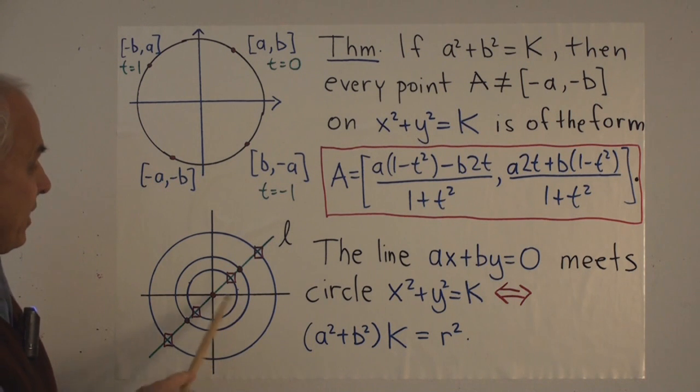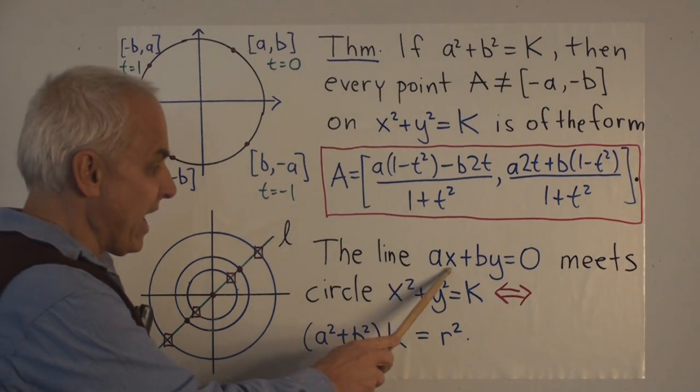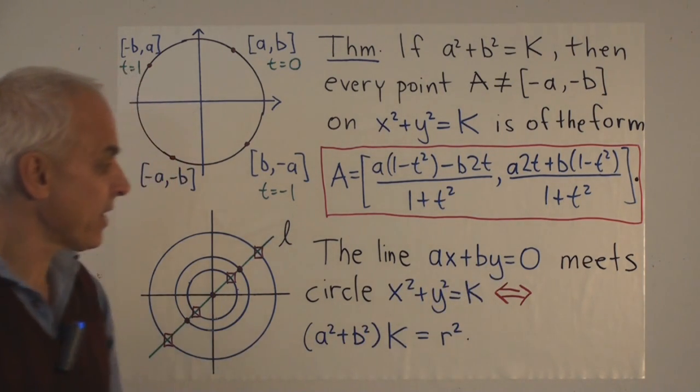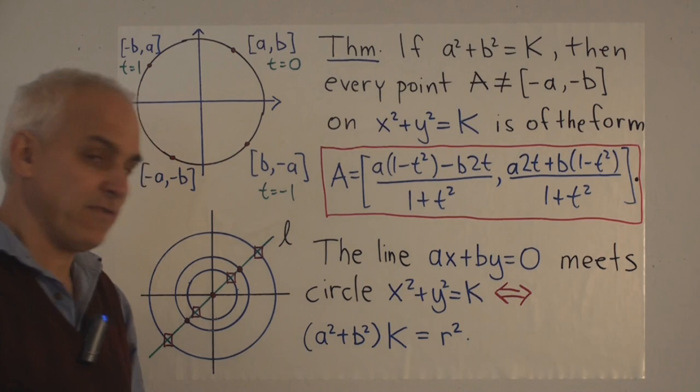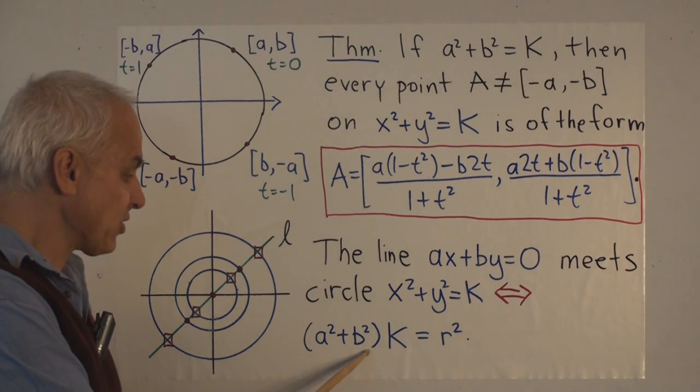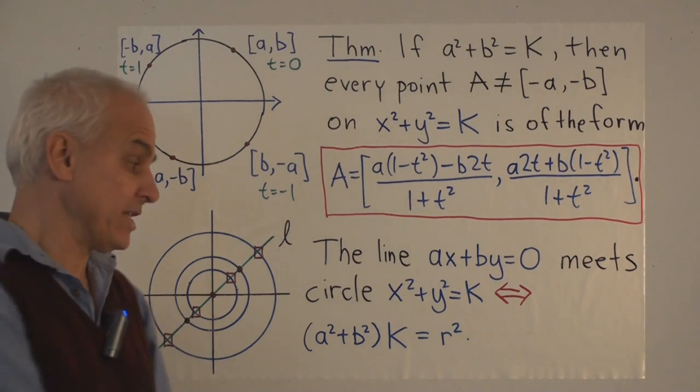So the situation in general here with the circle of the form x² + y² = K and a line through the origin of the form ax + by = 0 is that the line meets the circle precisely when this number theoretic condition is satisfied: when (a² + b²)K is a square. When we say it's a square, we mean that it's a number, a rational number r².